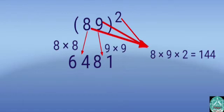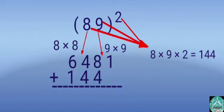Leave 1's column and write 144 below 6481. Then add. So the answer is 7921.